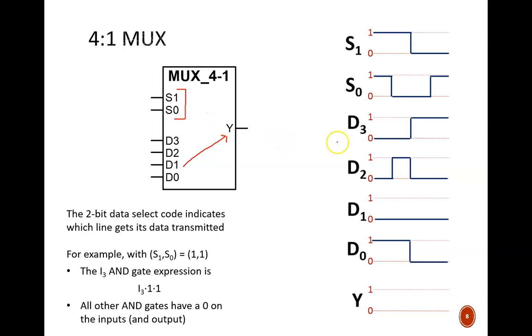In the first time slot, the select code is 11. This means that data input 3 is selected. D3 holds a 0. Therefore, that 0 passes through to Y, and all the other D inputs are ignored.